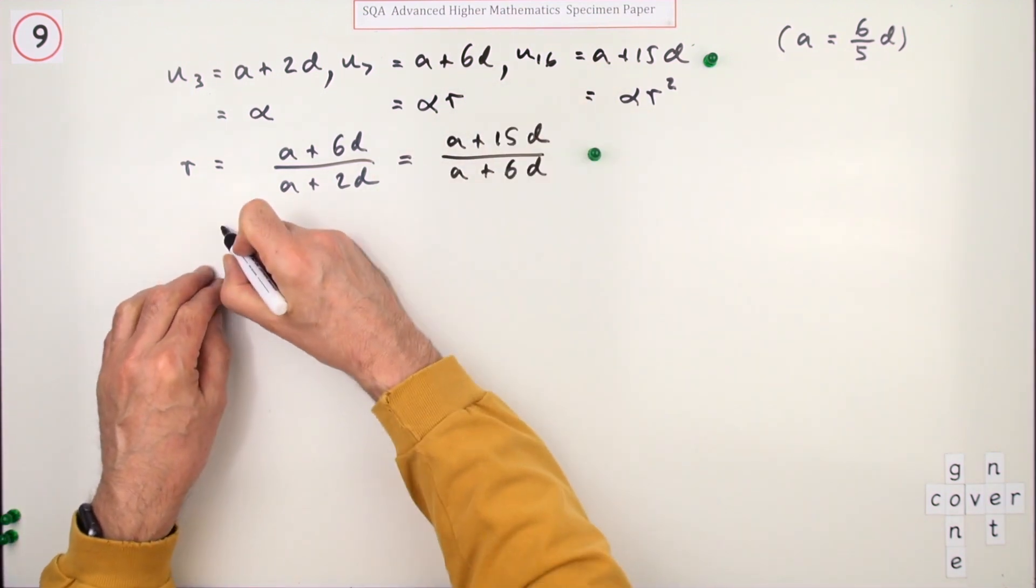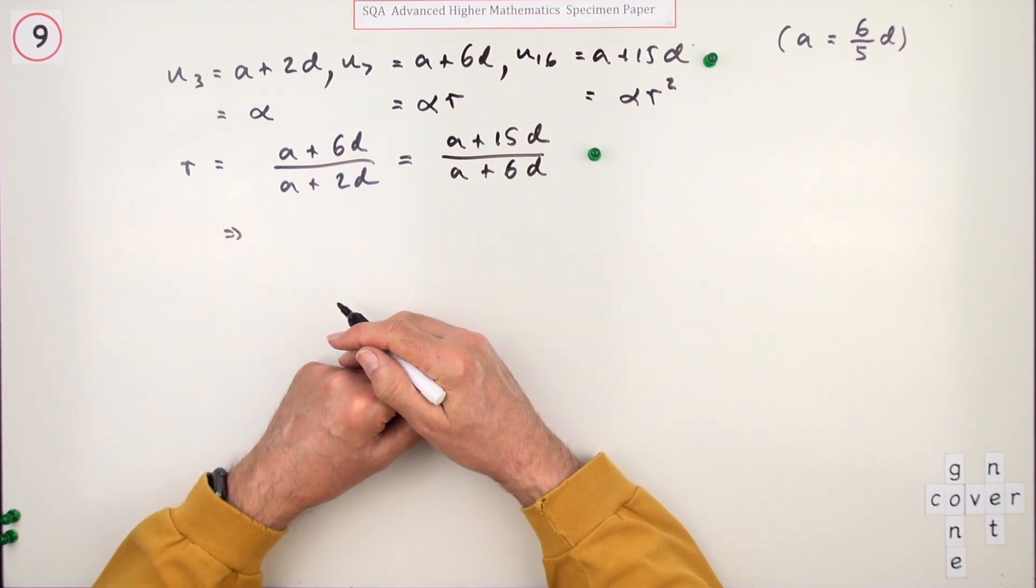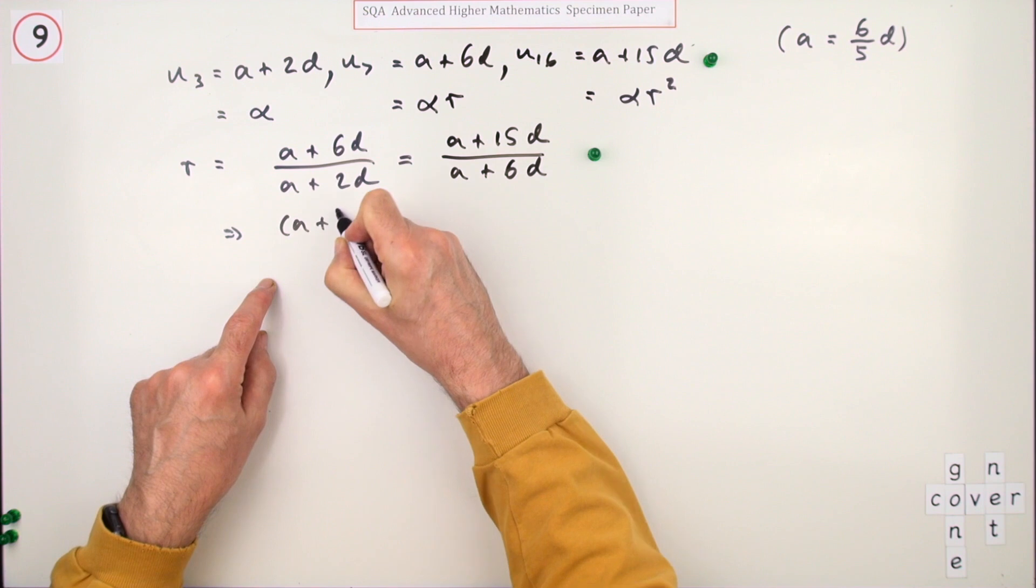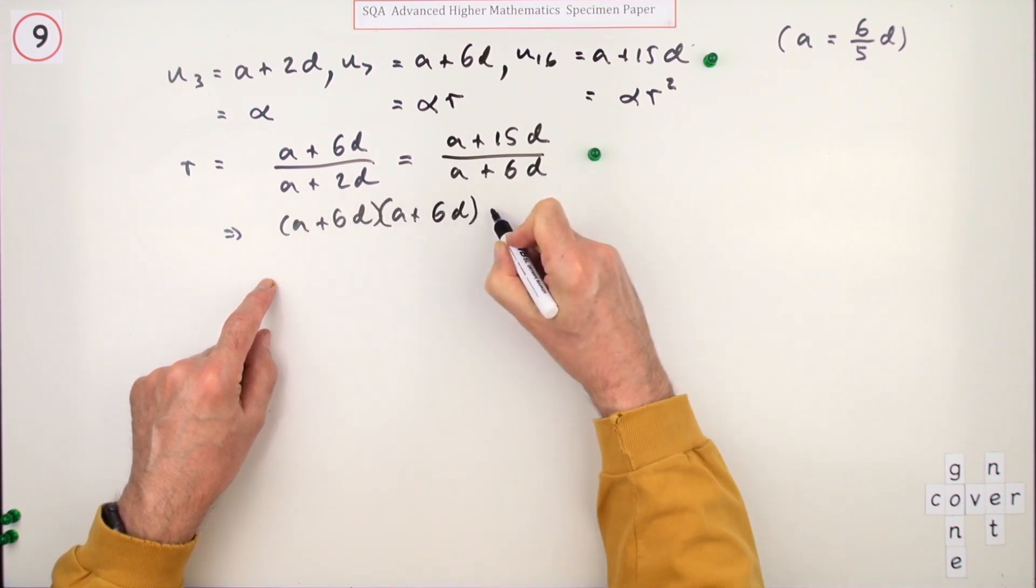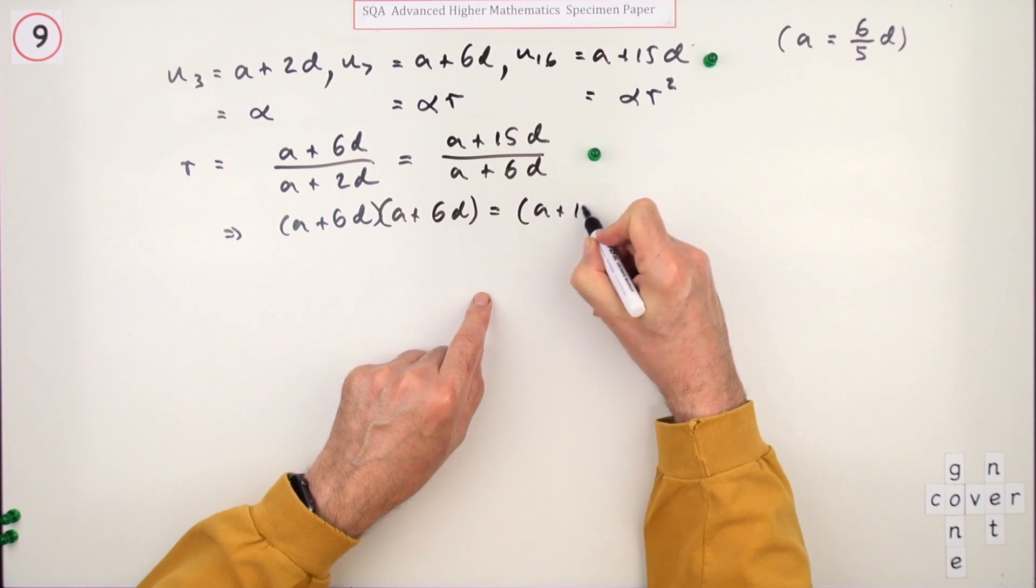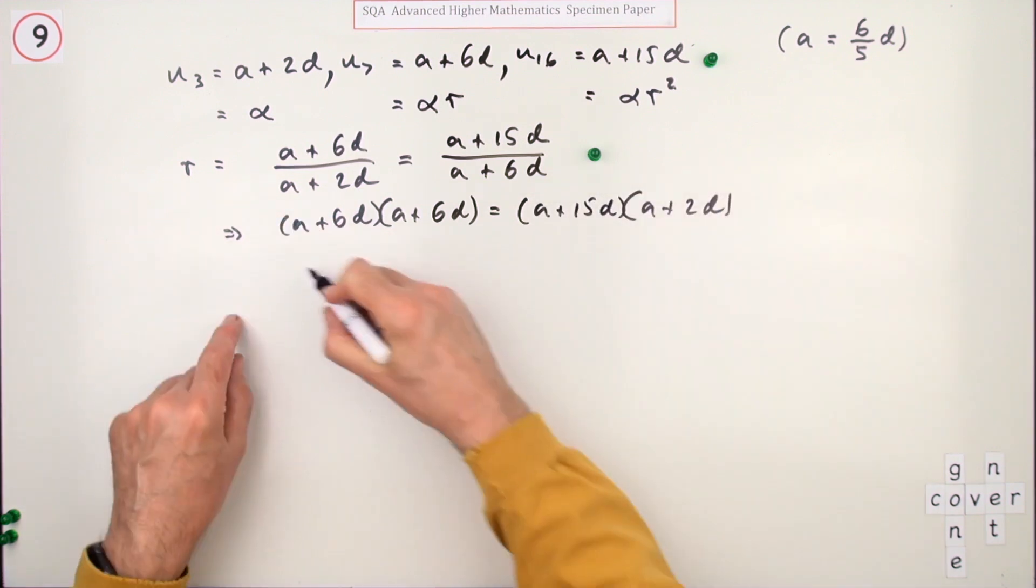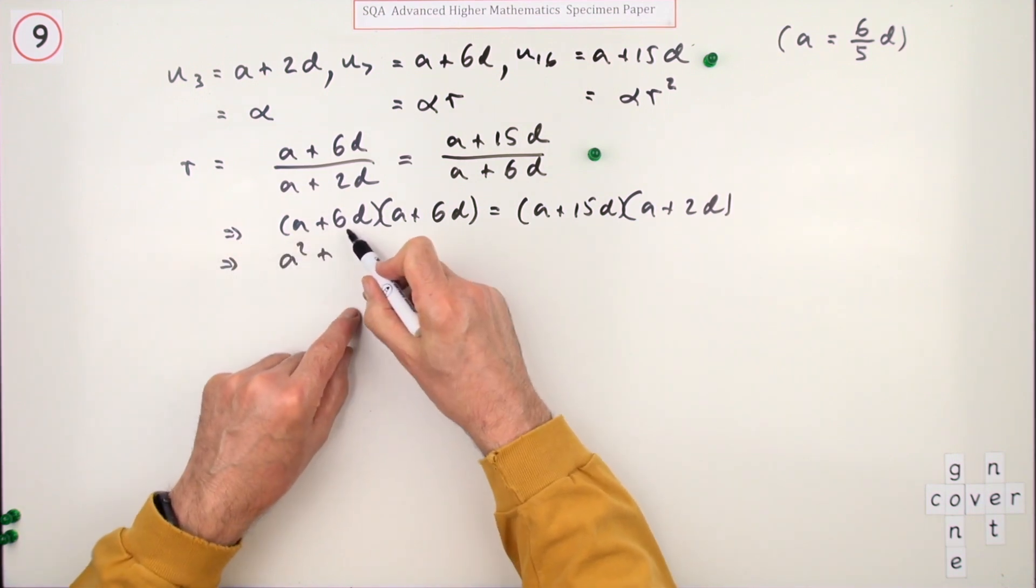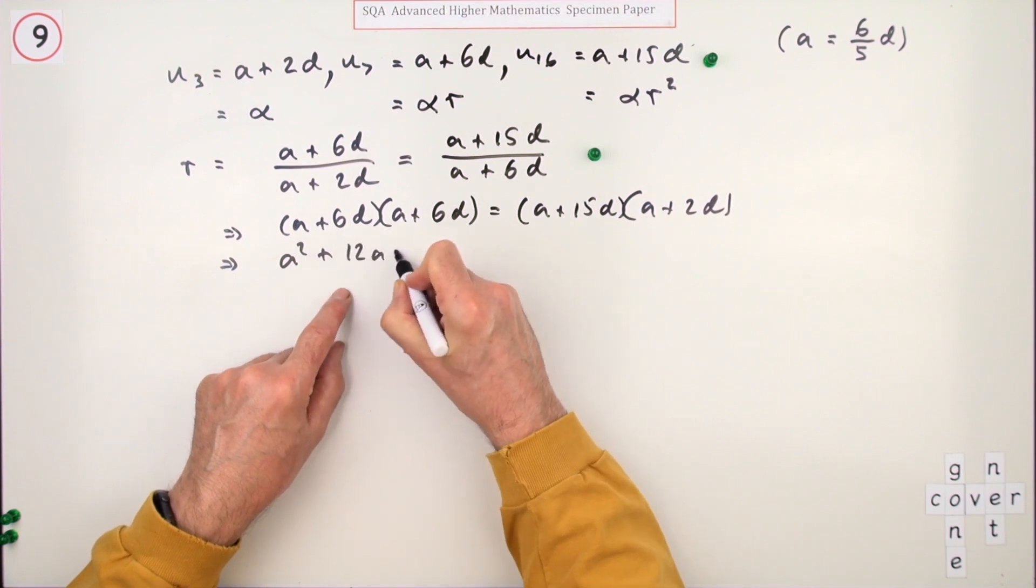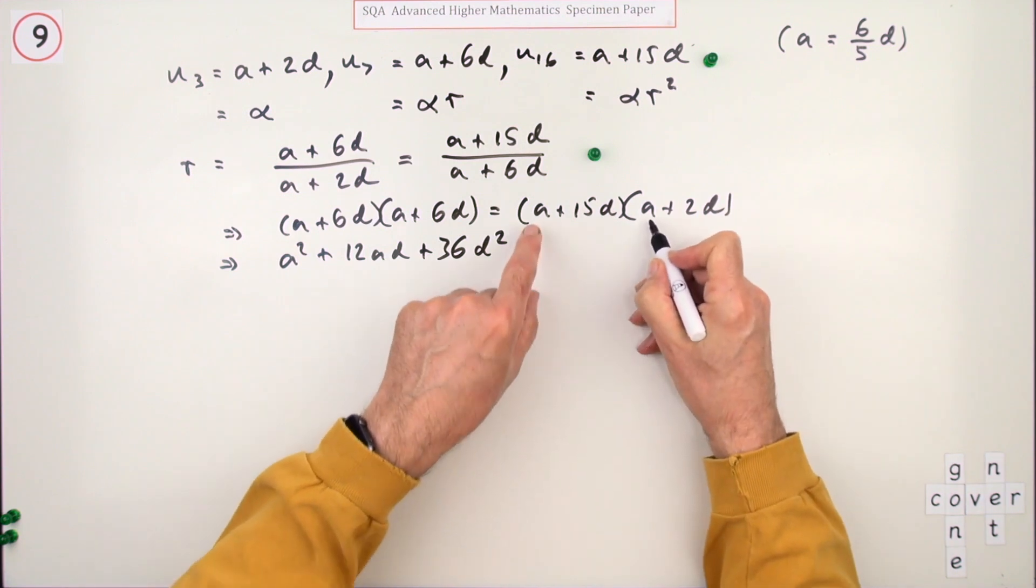Now I just need to cross multiply and start working this all out. So I've got a plus 6d times a plus 6d equals a plus 15d times a plus 2d. That's going to be a squared plus 12ad plus 36d squared. Not liking the look of that, but still.